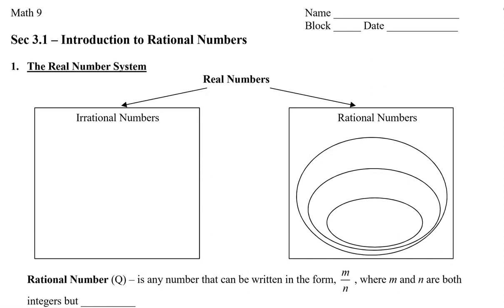So what is the real number system? Well, the real numbers are all the numbers that you can think of. They include irrational numbers and rational numbers.